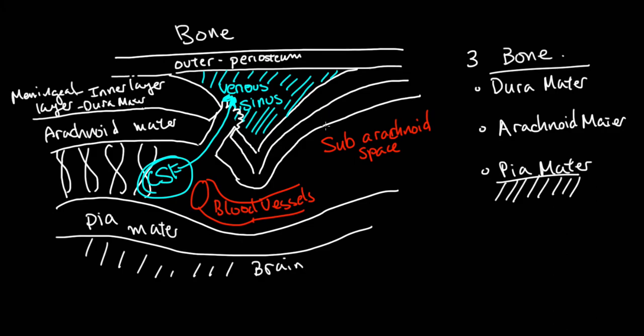Actually, one other thing. You've got blood vessels in here, but between the dura mater, between the outer layer and the inner layer, you've also got blood vessels running between them as well. And these are meningeal arteries.